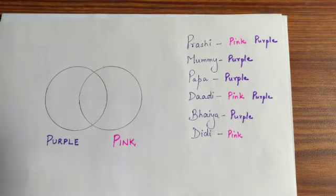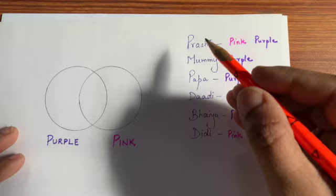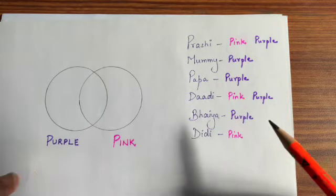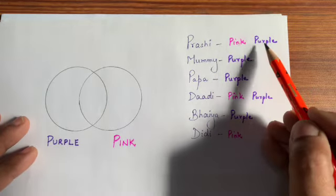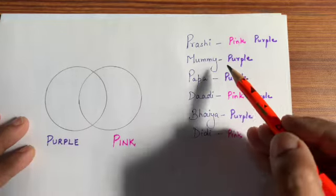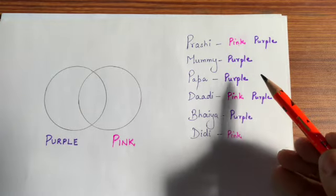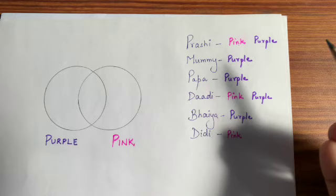Here I have done Venn Diagrams. I took two colors purple and pink. Then I have asked my daughter, which color you like? She said pink and purple. I like both. I said purple. I like purple. My father said purple.